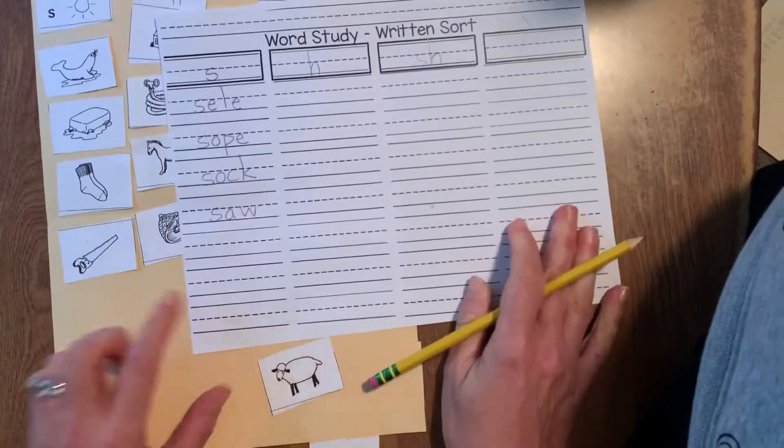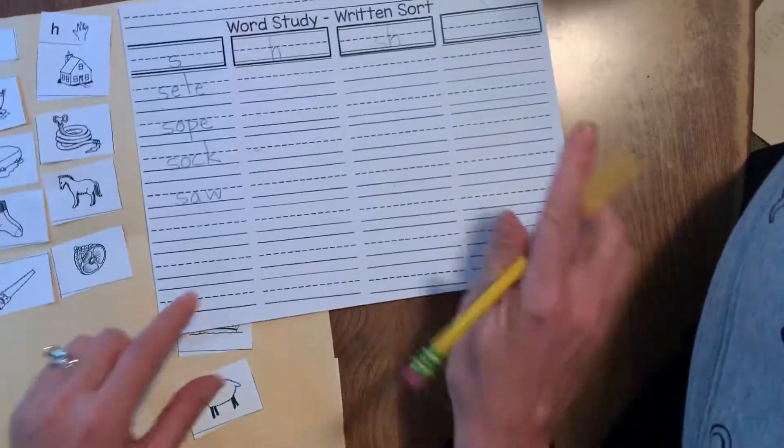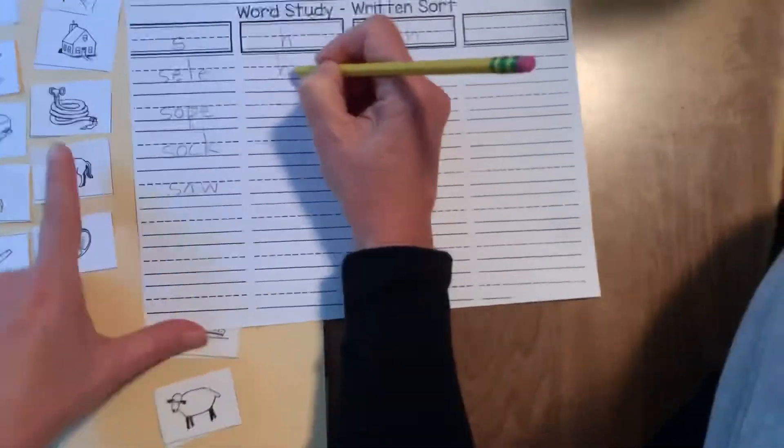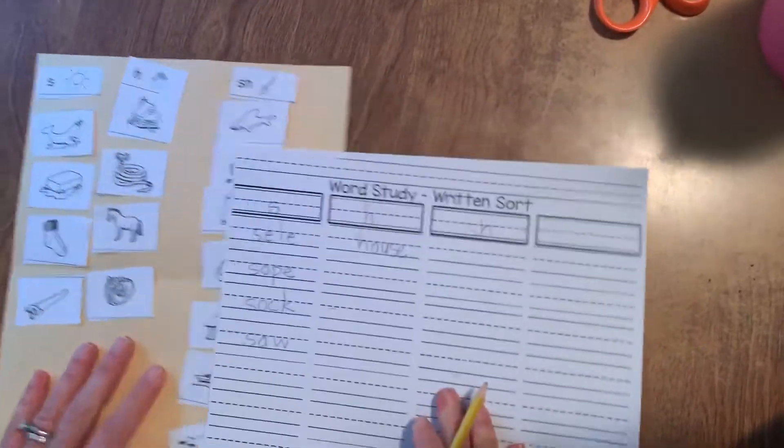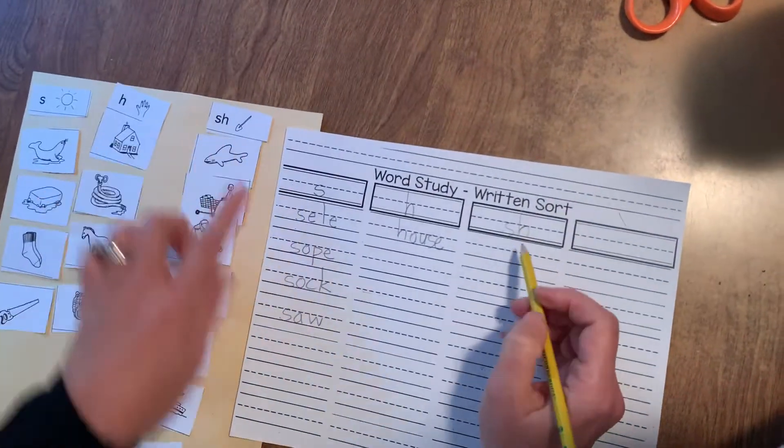They continue down, then they move over to the H words. House, hose, horse, ham. I'm not going to write them all. And then to the SH.